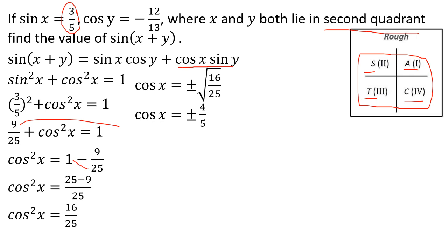Here is a shortcut for quadrant signs. All Students Take Coffee — in the second quadrant, sin is positive. All students: in the second quadrant, cos x equals minus 4/5.